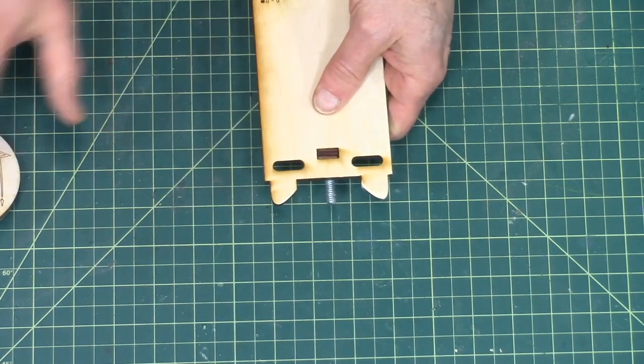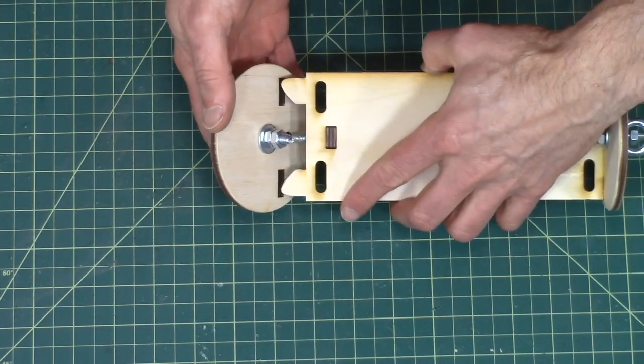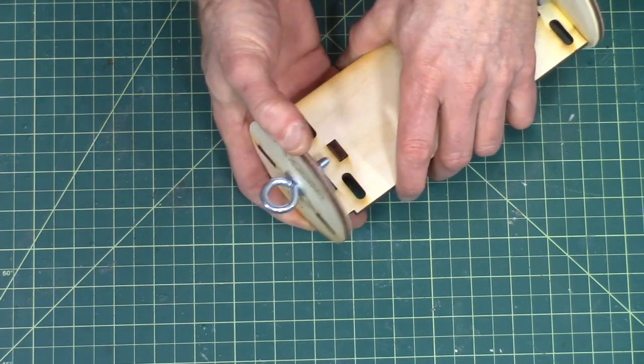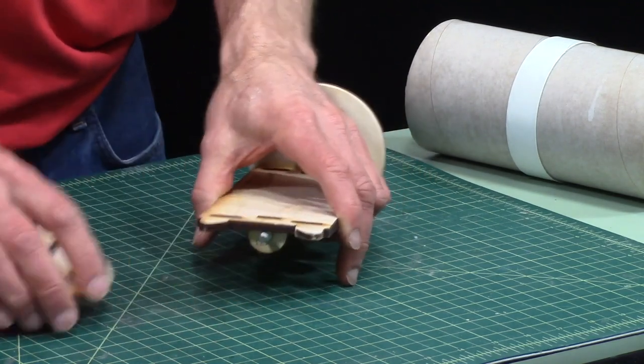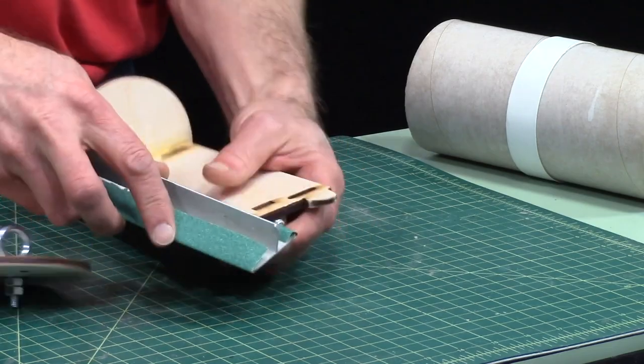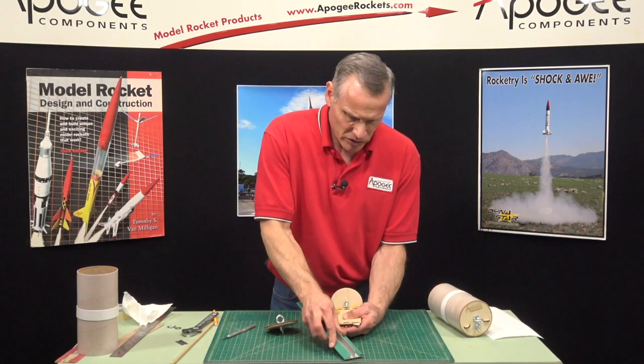Now these little notches right here, they engage these slots. And it would be like that and they kind of help guide it on, makes it a little easier to put your bulkhead on. But what I want to do is round off the edges here and that just makes it a little bit easier to get it started.